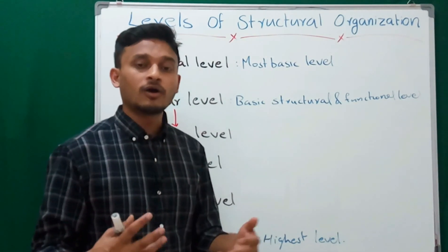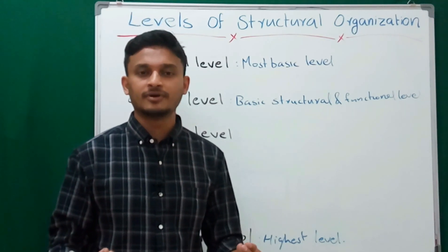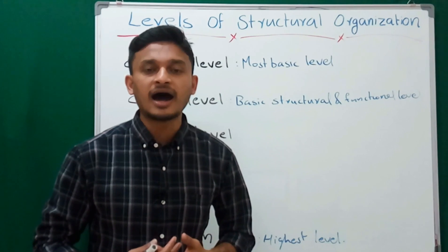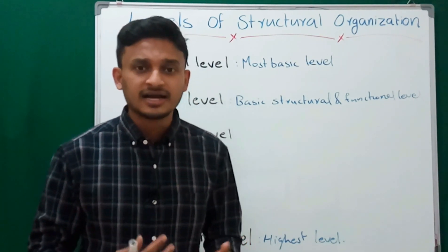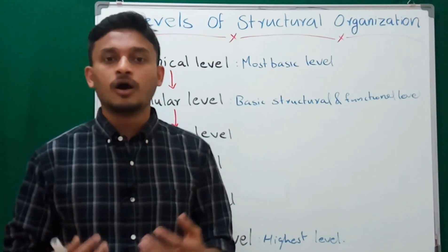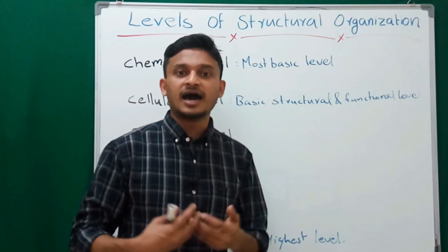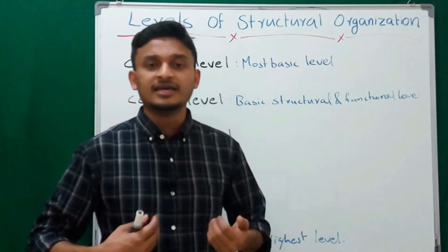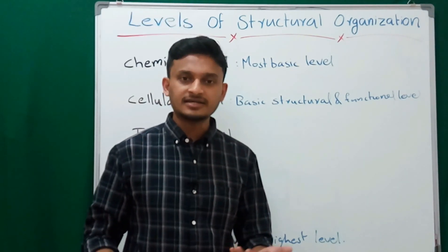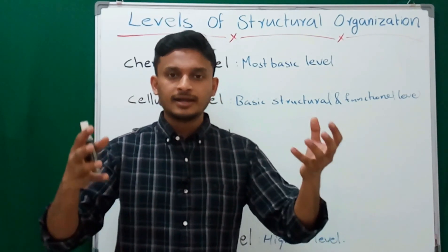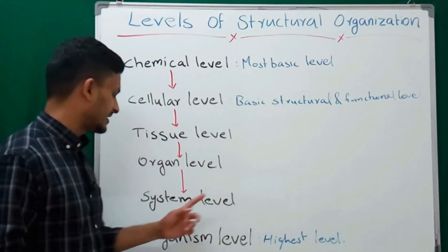The next level is the organ system level. For example, the cardiovascular system is completely related to the heart, blood, and blood circulation. Another example is the respiratory system, related to respiration, and the excretory system. These are different systems in the human body, each performing a particular task.